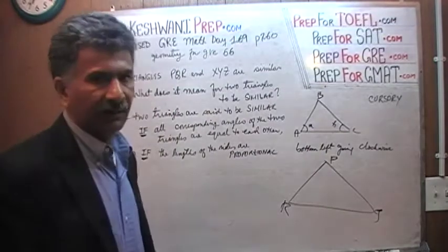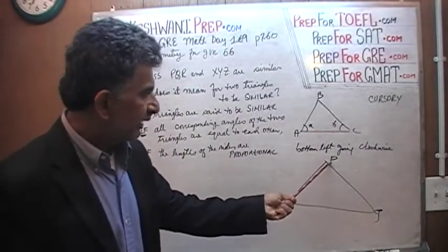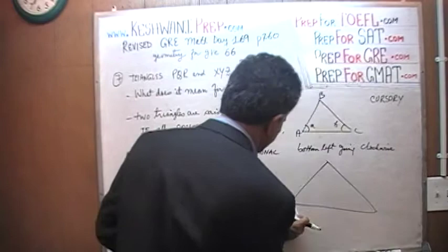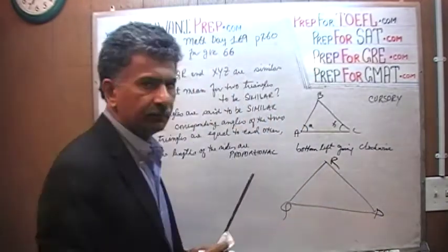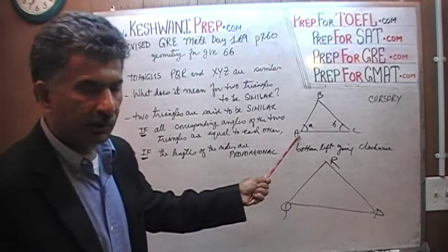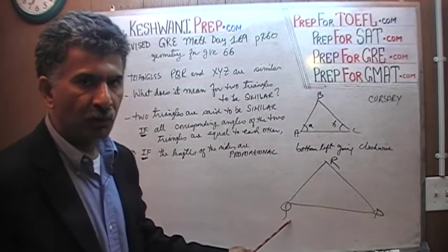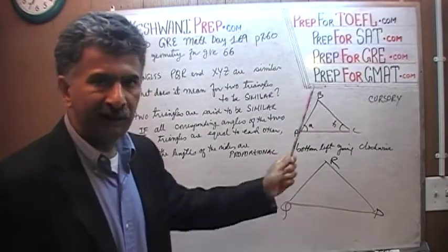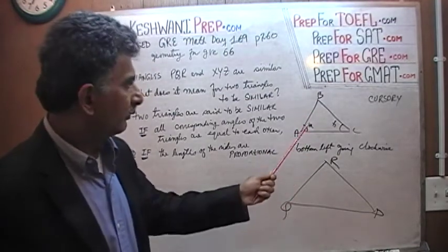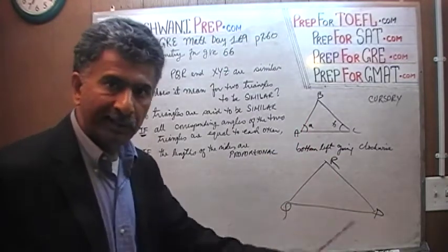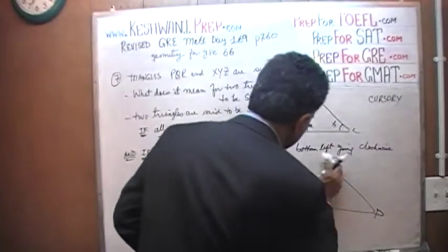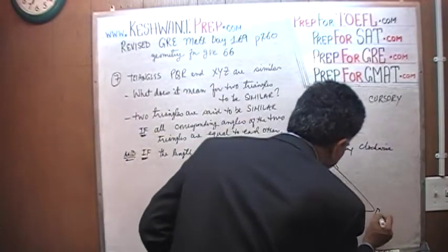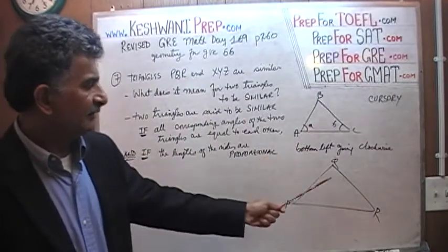These two triangles are not similar. Neither are those two. If this one started from the bottom left corner going clockwise, the other one also has to start the same way. You choose which corner you want to start with, but if you started from the top and went clockwise, you cannot go anticlockwise — counterclockwise as Americans call it — in the other one. So PQR must follow the same convention as ABC.